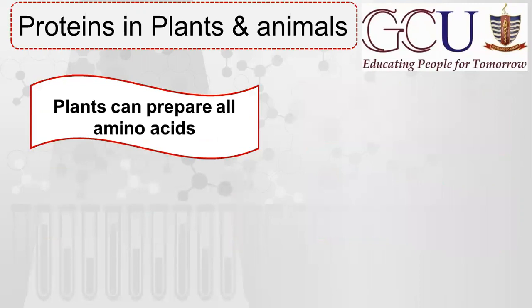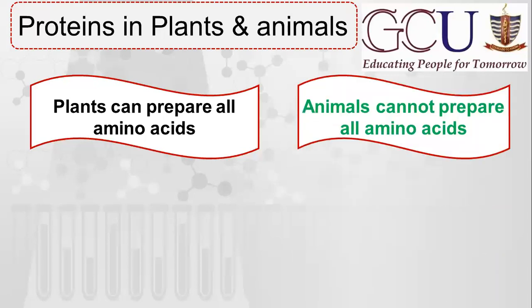Dear students, regarding proteins in plants and animals — plants can prepare all amino acids. Plants can synthesize all amino acids on their own. However, animals cannot prepare all amino acids themselves. This is why we say some amino acids are essential, meaning the body cannot prepare them. Plants can prepare all amino acids; animals cannot.